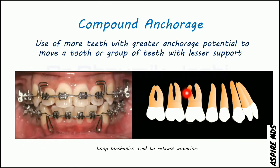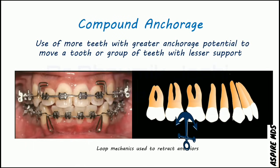Compound anchorage is where more than one tooth is used to cause movement of more than one tooth, but the anchor teeth have greater alveolar support compared to the teeth being moved. An example is the use of loop mechanics to cause retraction of the anteriors, where the posterior teeth act as anchorage and help cause retraction of the anterior teeth.